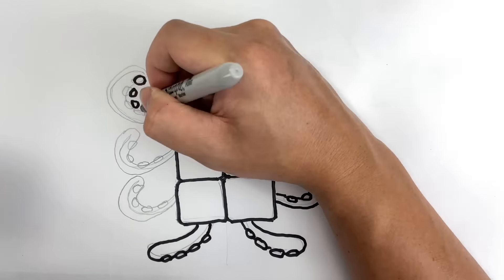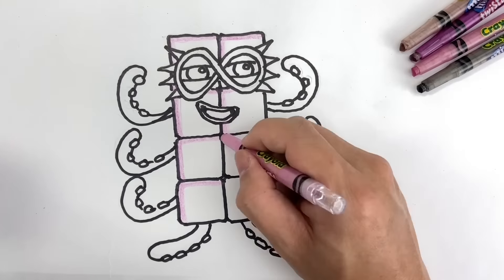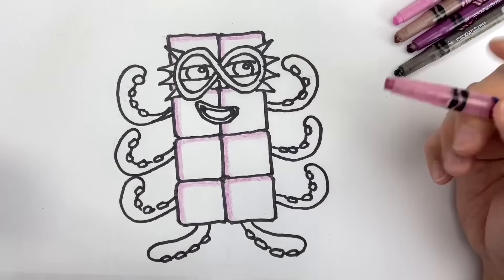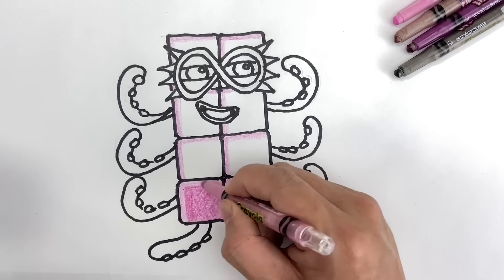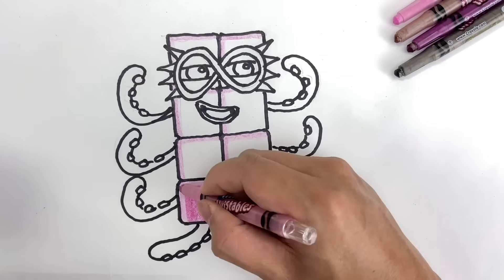Start with a lighter shade of pink and color in the highlights of Octoblock on the upper left side of his blocks. Then use the darker shade of pink to color in the rest of the blocks. Octoblock's eyes, mouth, and arms are not actually pink, but a darker shade of purple. We'll come to that later. Use your pink crayon to color in his suction cups.